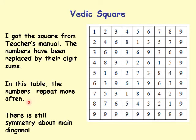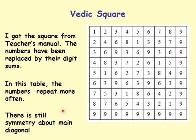In the Vedic square, numbers repeat more often. For example, 1 appears many times — whereas in the multiplication table it appeared only once in a given column. We still have symmetry about the main diagonal, and you can verify this with pairs like 2 and 2, 6 and 6, 3 and 3 appearing symmetrically.